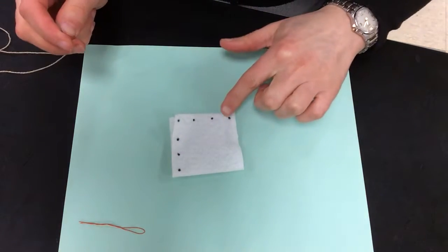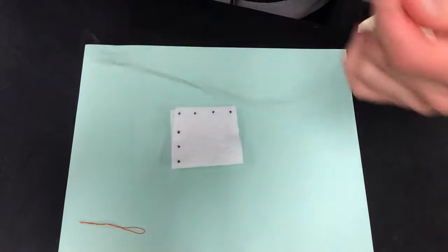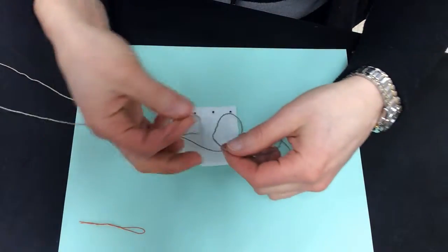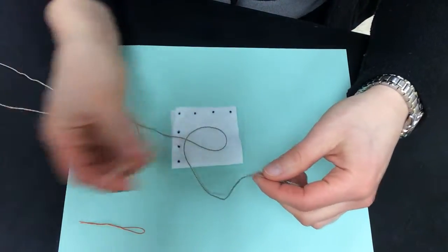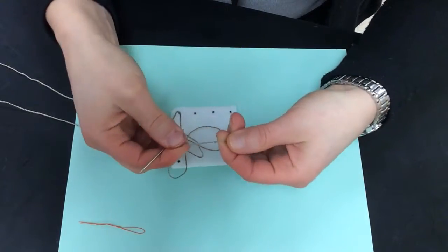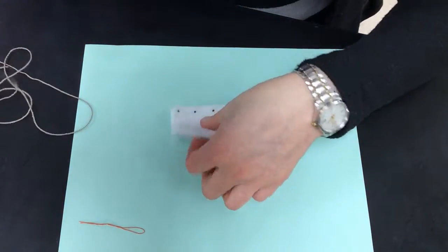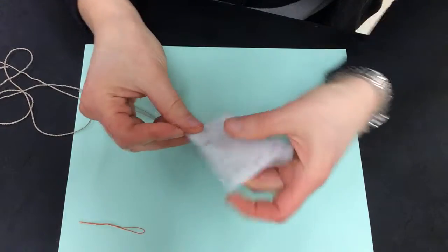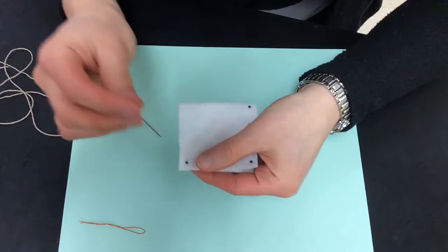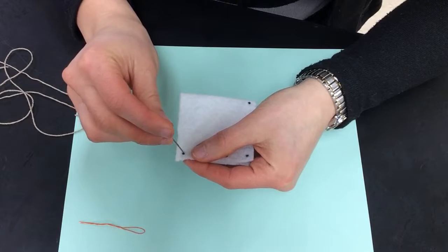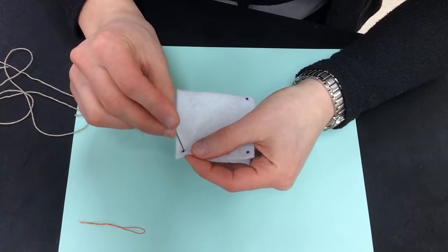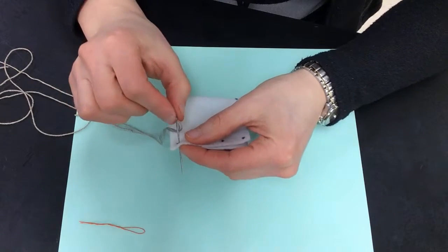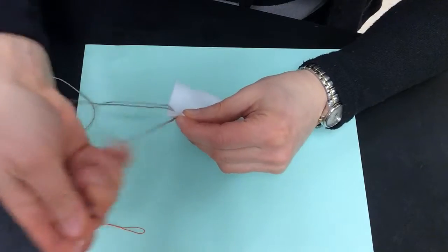Then what I'm going to do is I'm going to start down in this corner. So I have my thread, my thread is on my needle, it has a knot at the end. I'm going to take my needle and my fabric, and I'm going to push the needle through the fabric on that dot. I'm going to pull it all the way through.